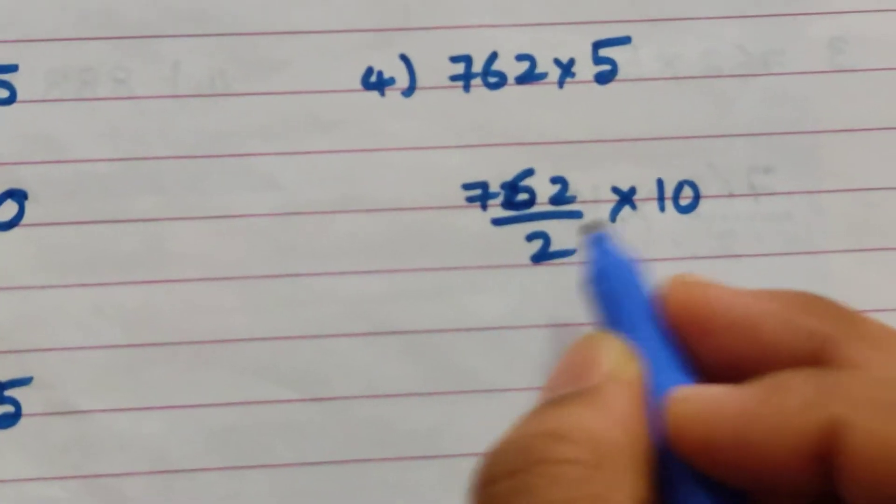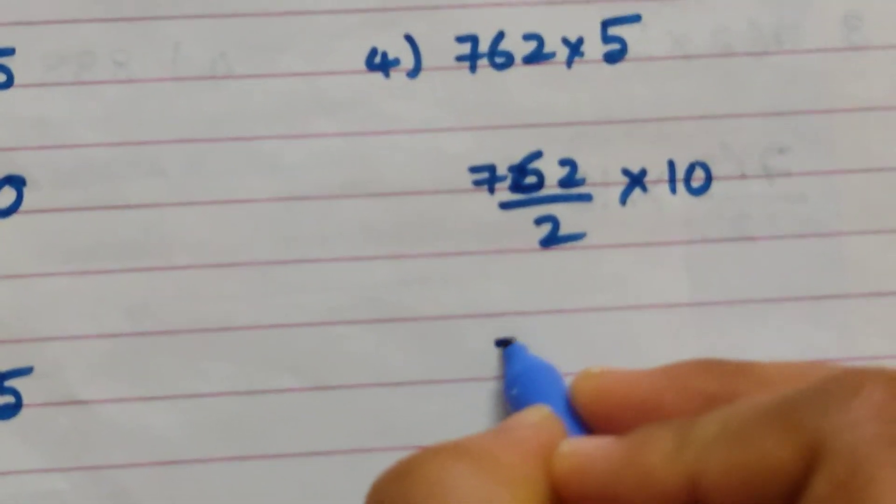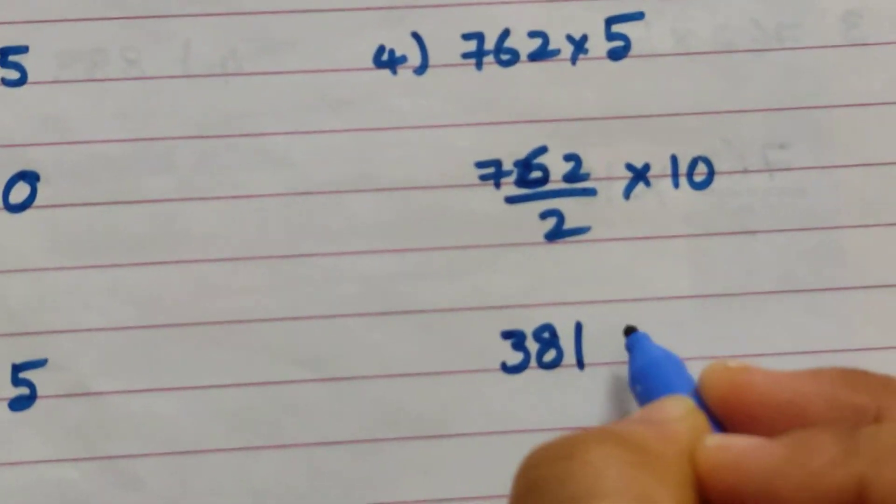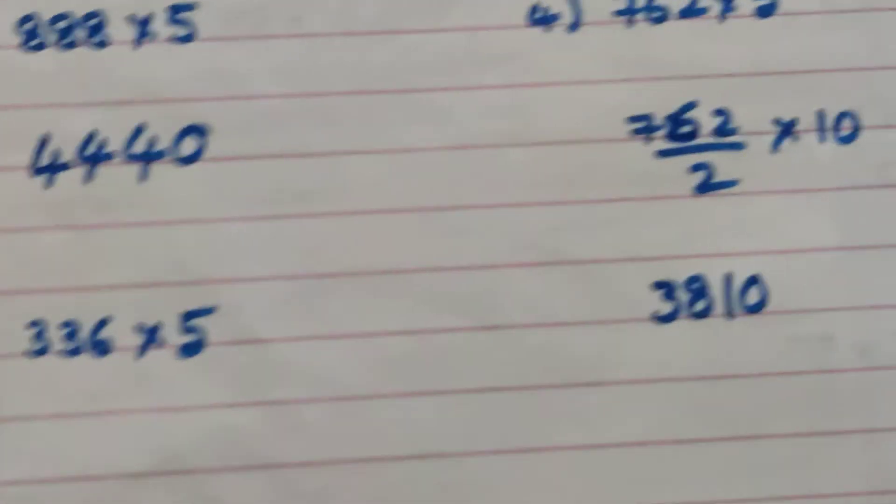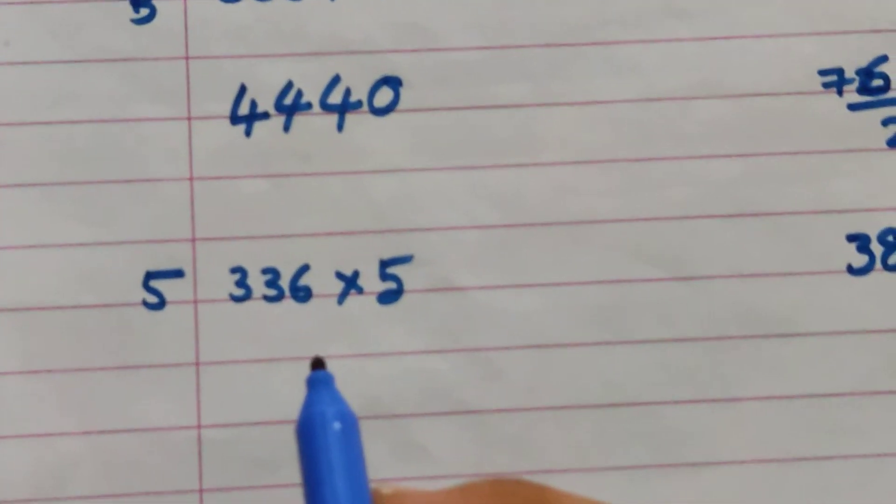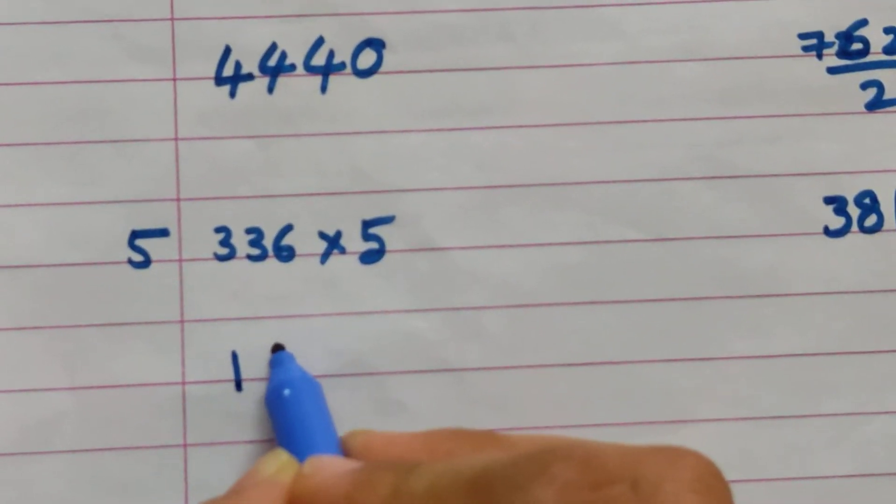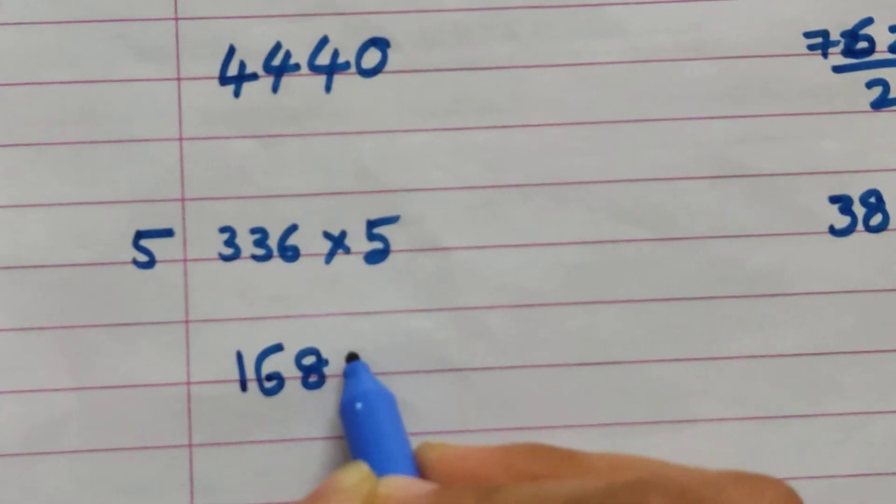762 by 2 into 10. Now two threes are 6, two eights are 16, two ones are 2, so into 10 means add 0. Here's one more also using the two-table: two ones are 2, two sixes are 12, two eights are 16, so add 0. Very simple.